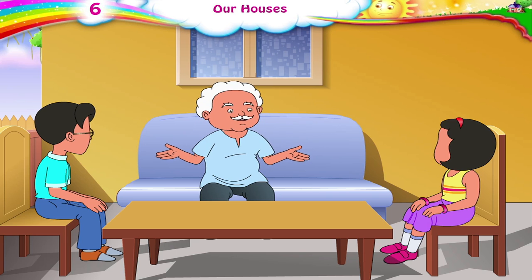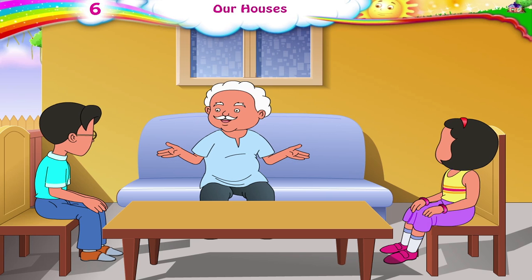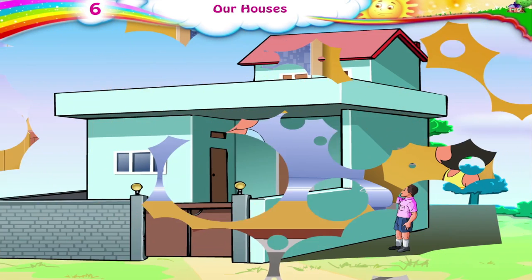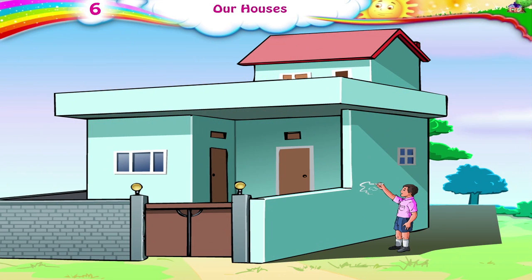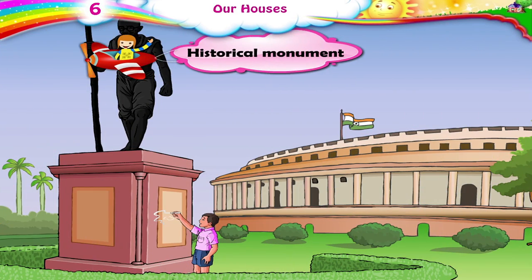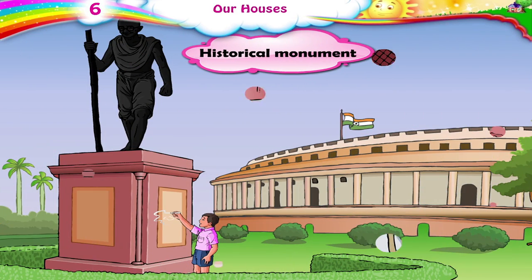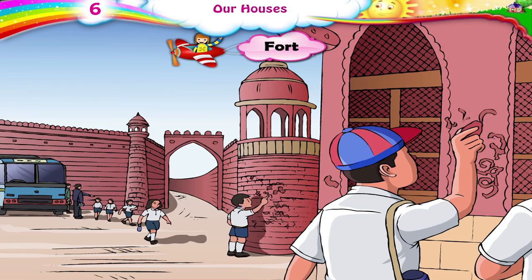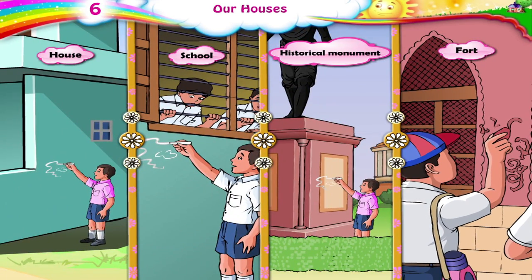Children, remember, we too must look after the environment. We must never write anything on the walls of houses, schools, historical monuments, forts, etc. If we do see anyone doing the same, we must talk to them politely but firmly and try to stop them.